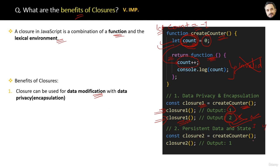Combining data and the function together to access the data value is called encapsulation, which is one of the pillars of OOP. The third benefit is persistent data and state. Each time createCounter is called, it creates a new closure with its own separate count variable. For example, closureOne and closureTwo will maintain different states and run independently.